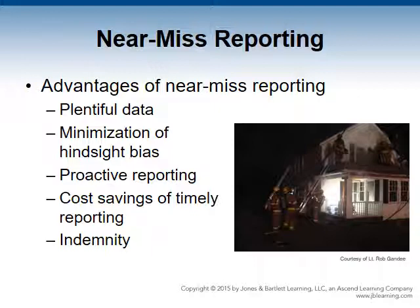The next component is minimization of hindsight bias. A simple example of hindsight bias is "I knew that was going to happen" — or maybe it's the armchair quarterback Monday thing: "If I was in that situation, I would have done X, Y, Z."